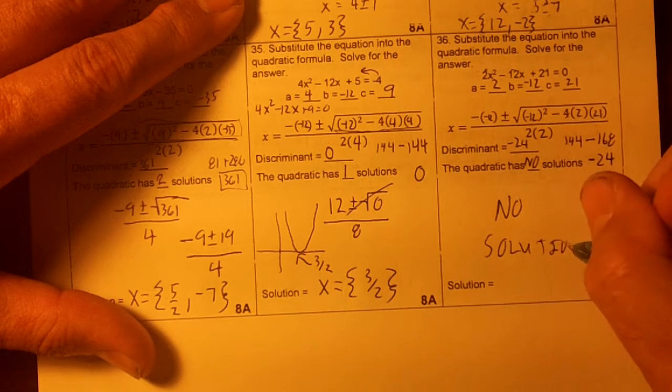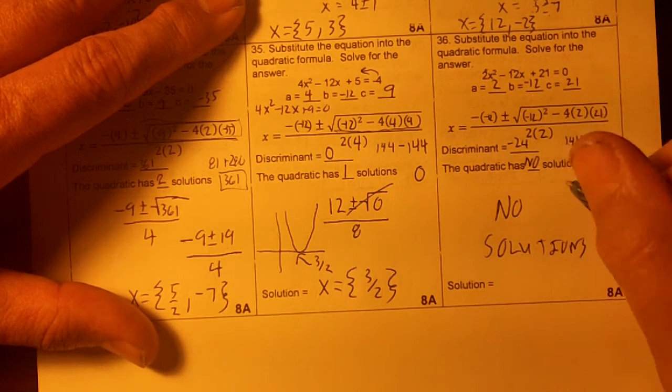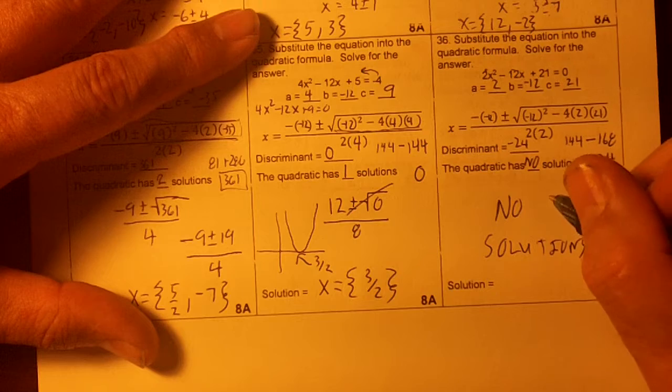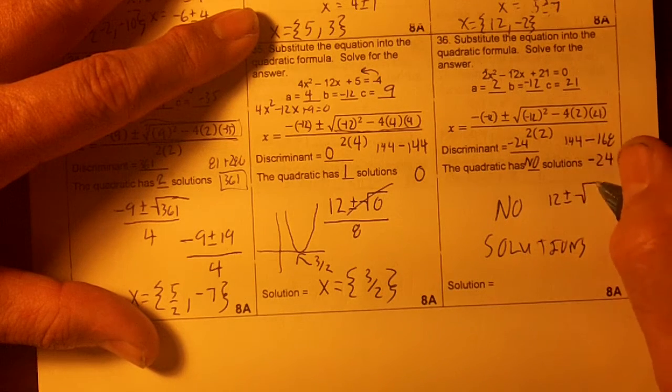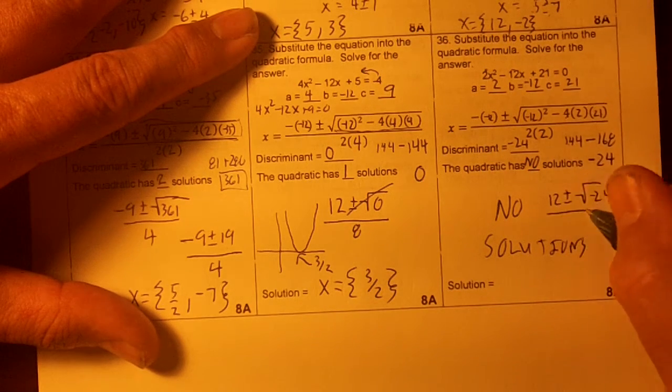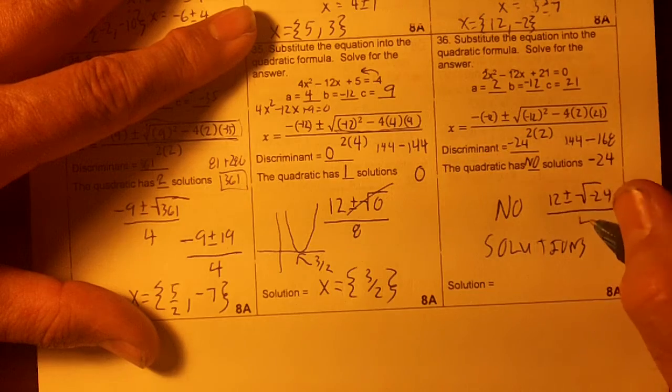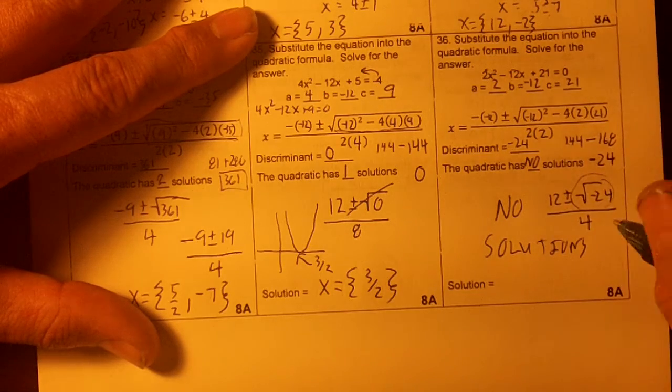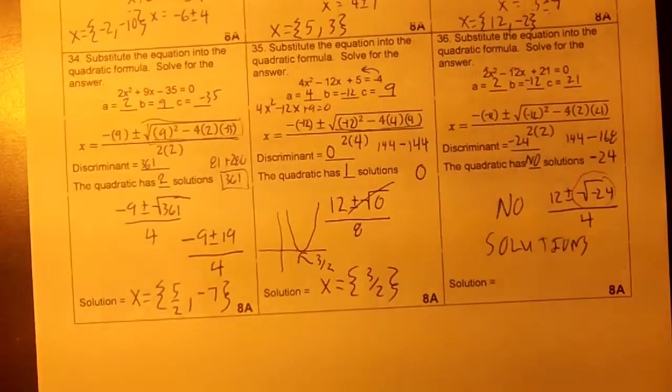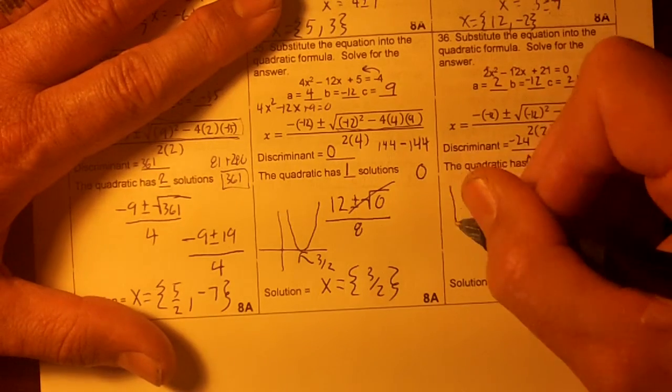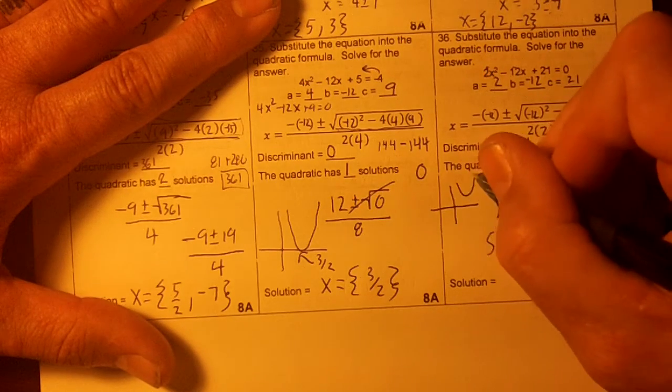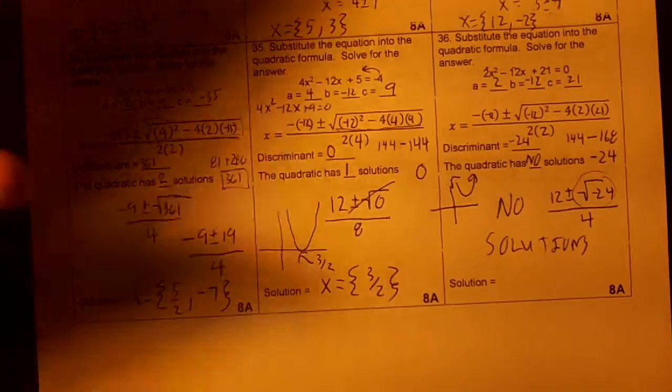Because our discriminant is negative. So we would have 12 plus or minus the square root of negative 24 all over 4. And since that's a negative square root, you have no solution. Which means your parabola would look like this. It would not cross the x-axis.